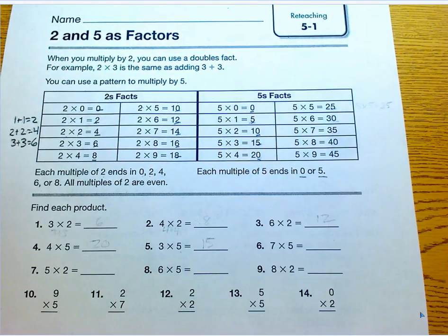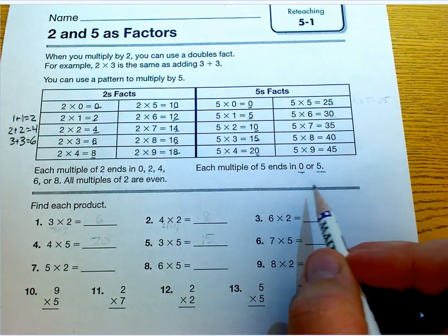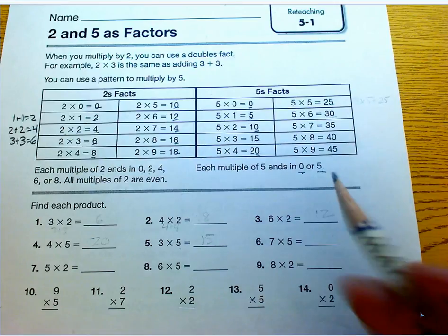So same thing with the twos. If you look at a multiplication problem with 5 and you have, oh, 5 times 5 equals 26, well, I know that can't be true because it needs to end with a 0 or a 5, okay?